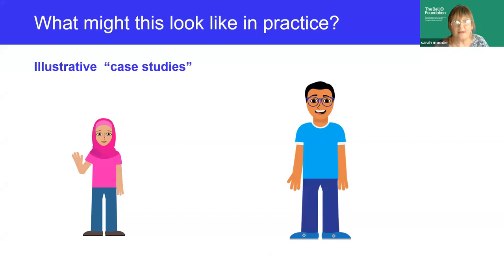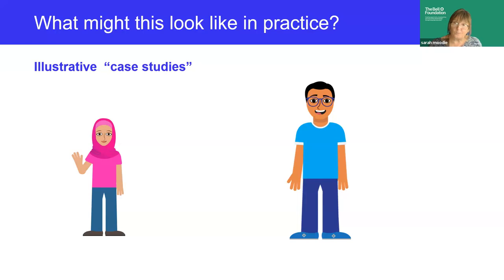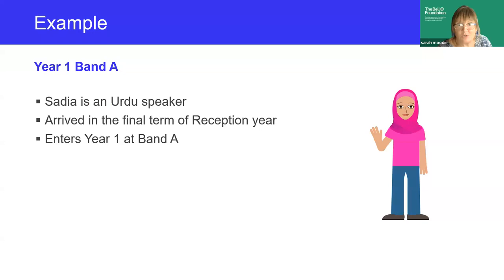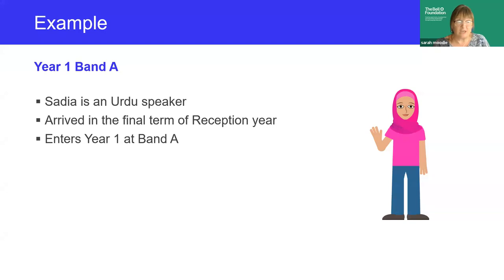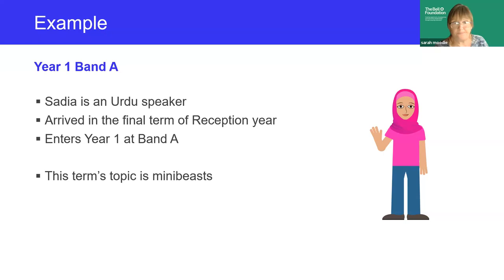To finish up, I'm going to illustrate how using the strategies and guidance document might play out in the real world with a couple of illustrative case studies, based on an amalgamation of real children. First, I'd like to introduce Sadia — an Urdu speaker who arrived from Pakistan in the final months of reception year, just before school closed for the summer. She's already made a couple of friends but is a very shy girl. She's now started in year one at band A with very little English at the moment, but she's a happy, lively girl full of curiosity who likes books and animals. This term, year one is kicking off with the topic of mini-beasts.